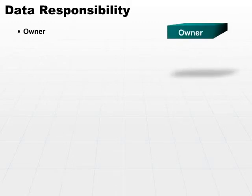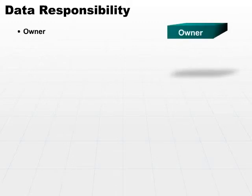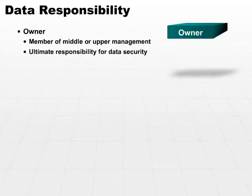First and foremost, there is the owner. The data owner is always going to be a member of management, typically upper management, that is responsible for the data security — for the security of that particular object. Regardless of its classification, the owner is responsible for maintaining the security of that data object.